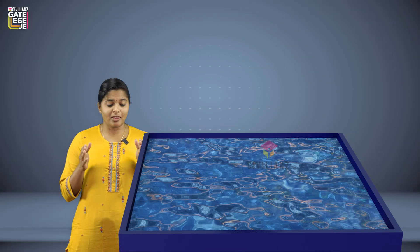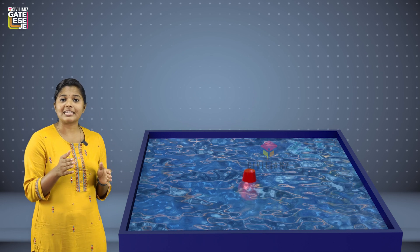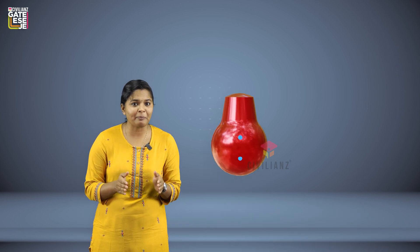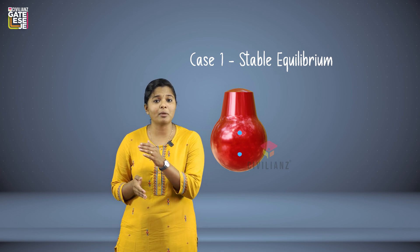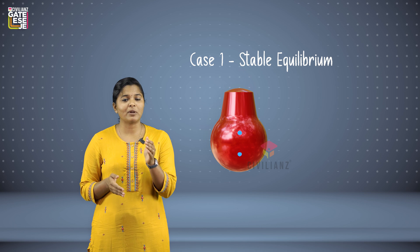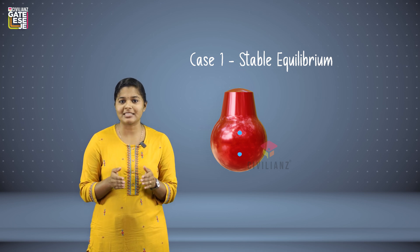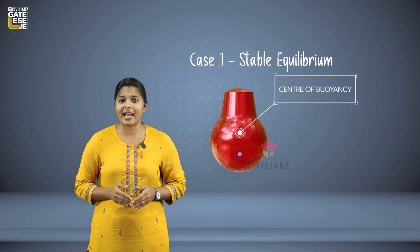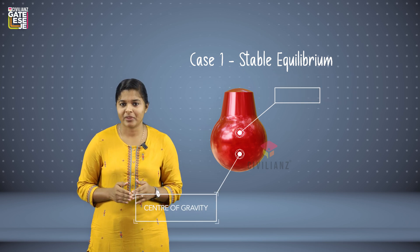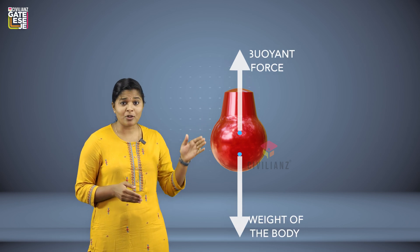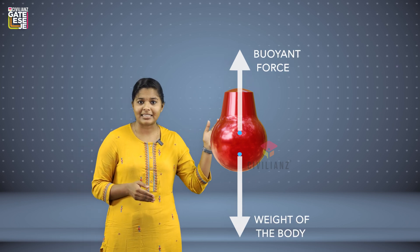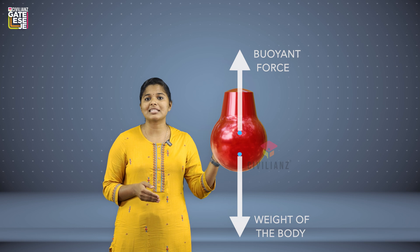For a submerged body, the whole weight is concentrated at a point which is known as its center of gravity, represented as G. When this body is immersed into water, there will be an equal volume of water displaced. The whole weight of the displaced volume of water is concentrated at a point called the center of buoyancy, represented as B. The weight of the body acts downwards and the buoyant force acts upwards.